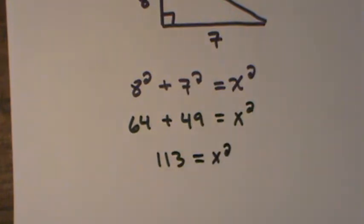Now to get X by itself, I have to root both sides. The square root of X² will be X.